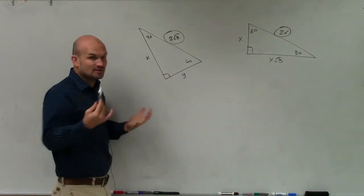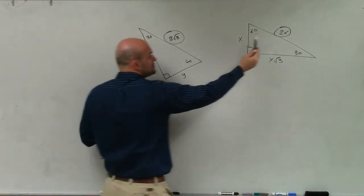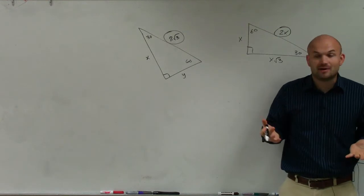So I always like to go with the easy one, the hypotenuse to the short leg. What do we have to do to go from hypotenuse to short leg? We have to divide by 2.